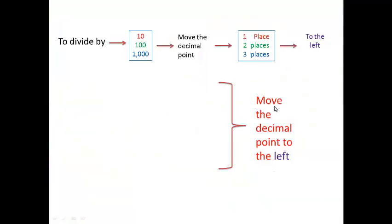To divide by 10, 100, or 1000, move the decimal point to the left. For 10, move the decimal point one place to the left — there is one zero in 10. For 100, move two places to the left — two zeros in 100. For 1000, move three places to the left — three zeros in 1000.